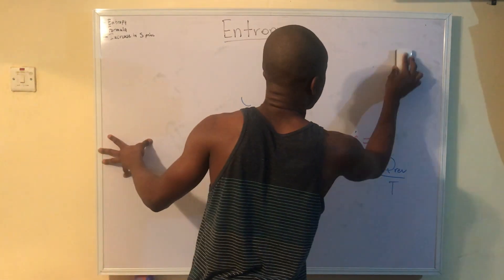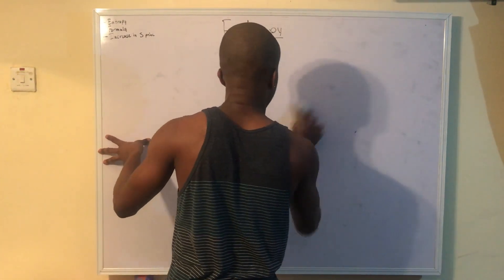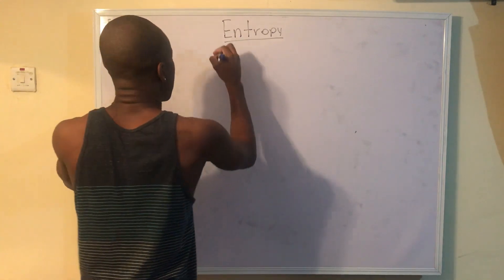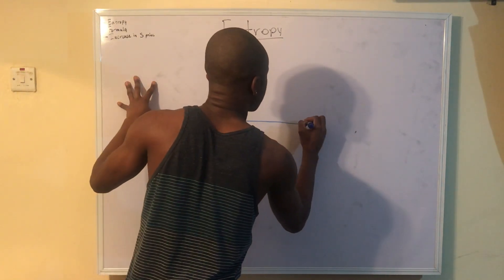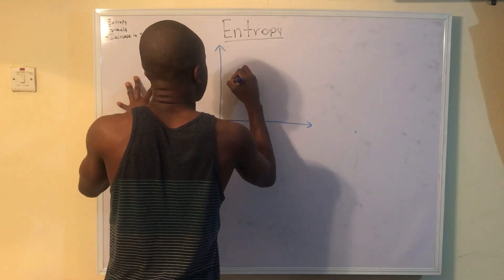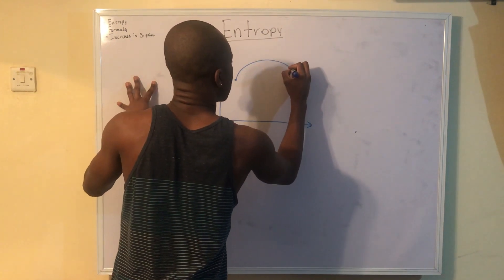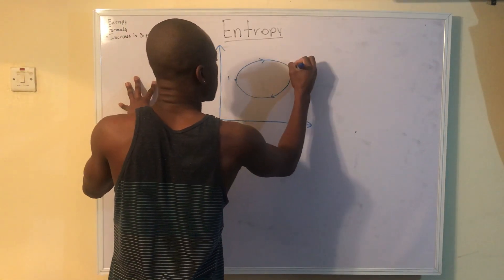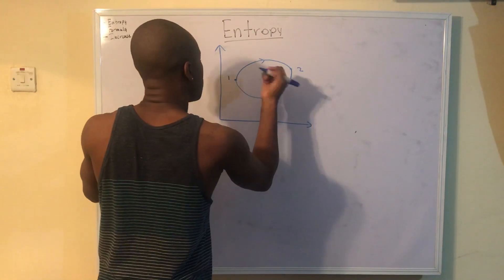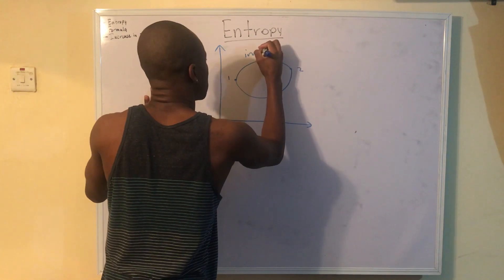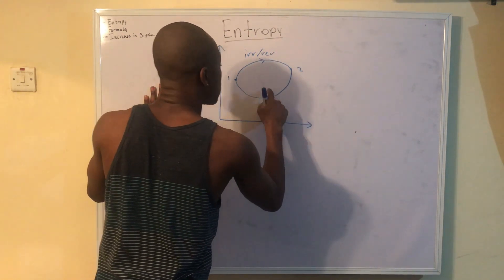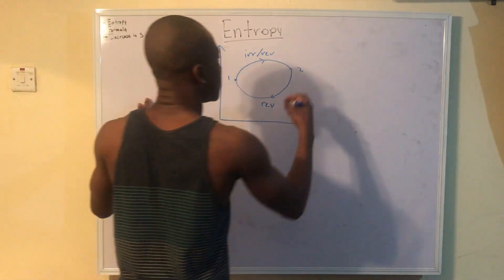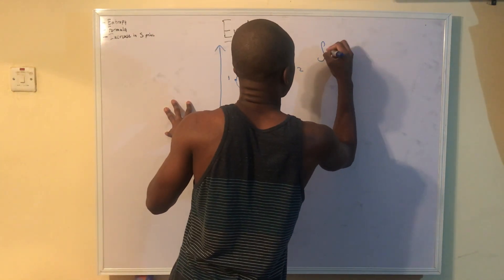We also have something called the increase in entropy principle. Let's say we have a process where I start at state one and go to state two and back to one, operating on a cycle — carried out irreversibly from one to two, and reversibly from two back to one.